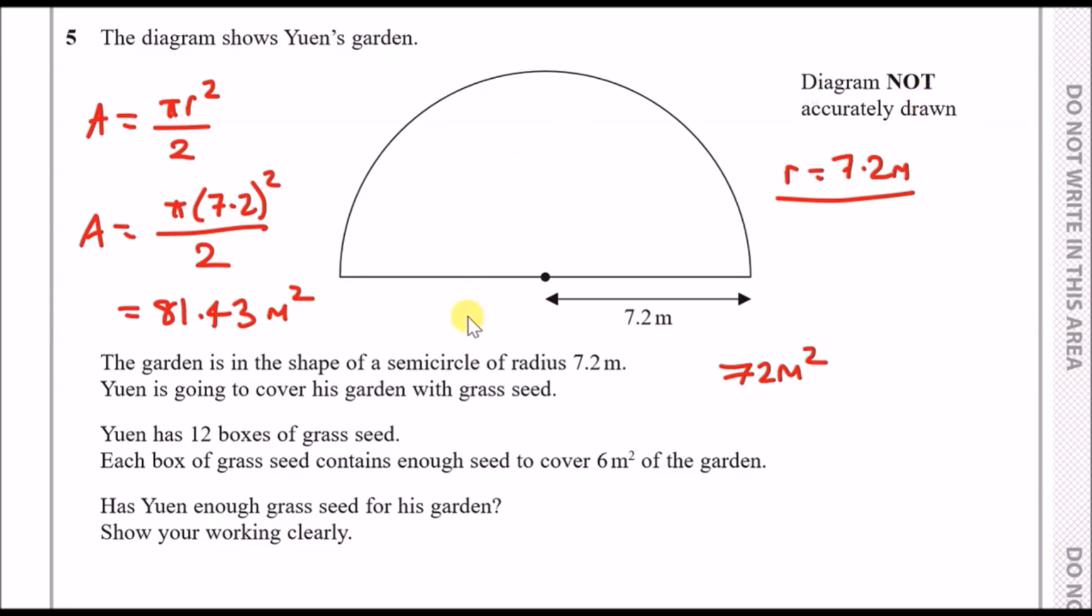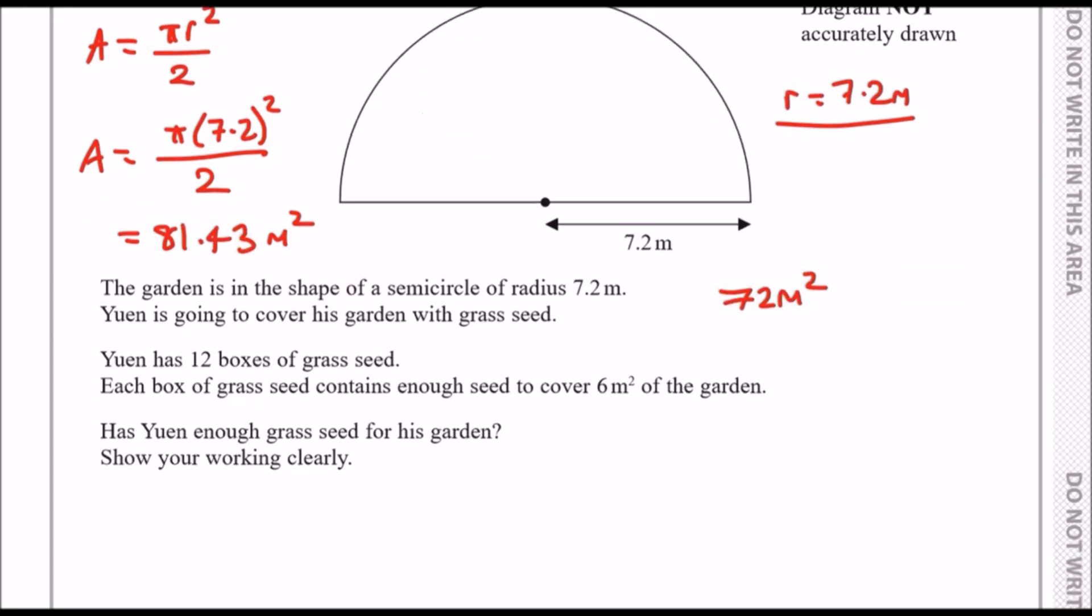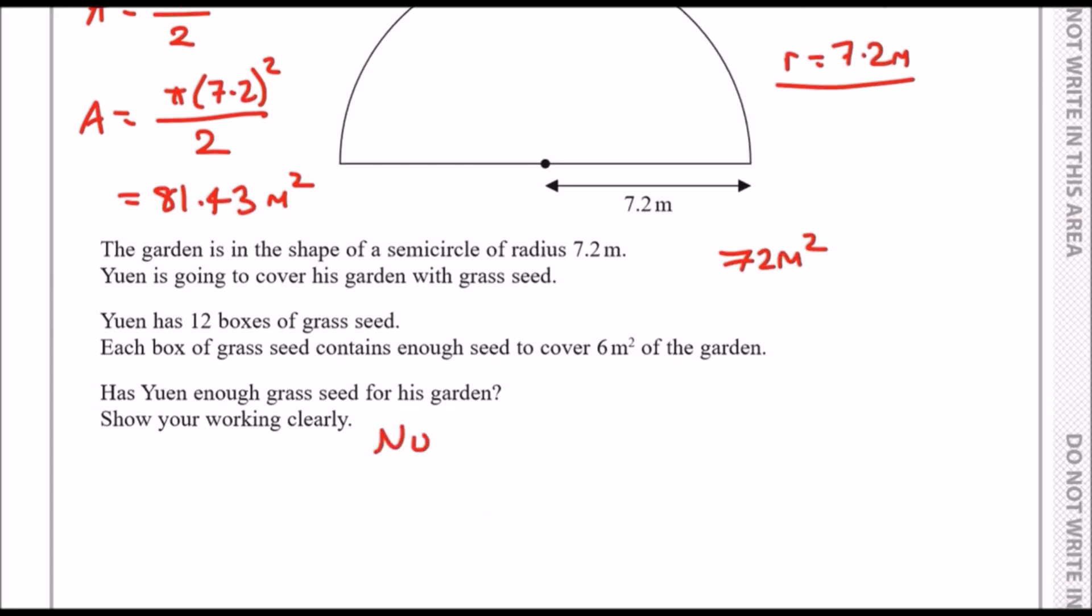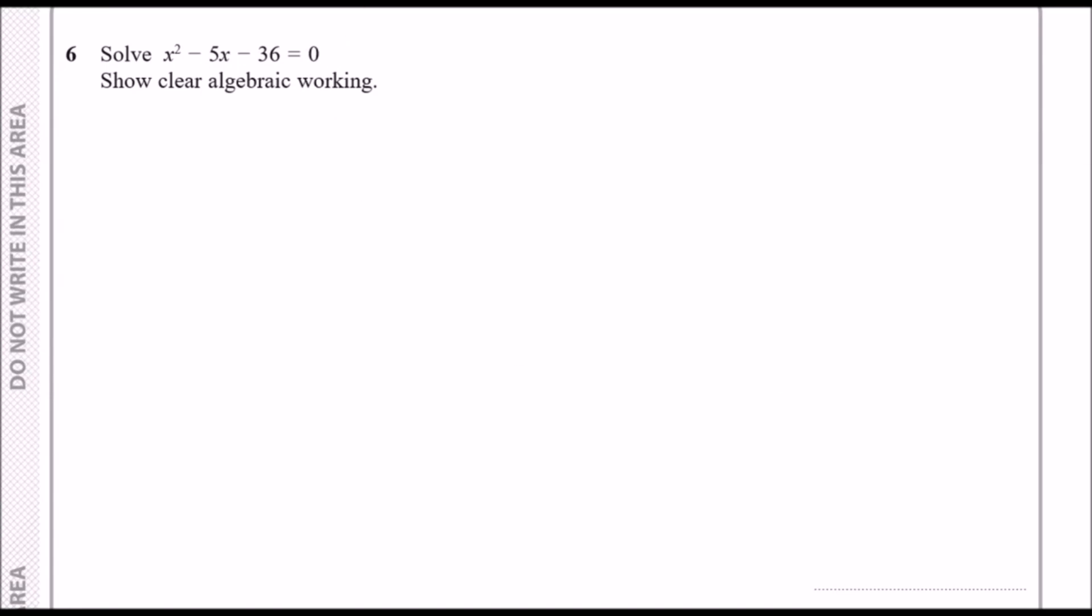We know that Yuen has 12 boxes of grass seed and each of these boxes has enough seed to cover 6 meters, so 12 times 6 is actually 72 meters squared. So he could only cover 72 meters squared. The question asked if this is enough. Well it's actually not enough because he needs 81. So the answer would just be no because 72 is way less than 81.43.